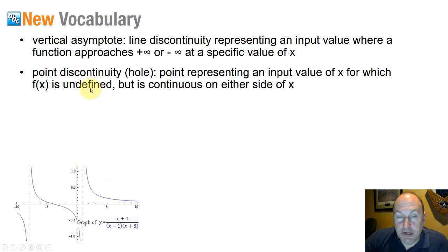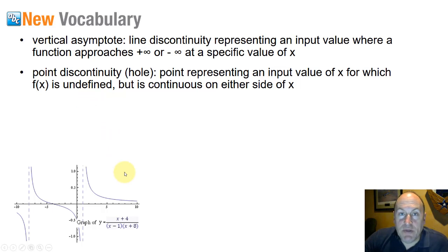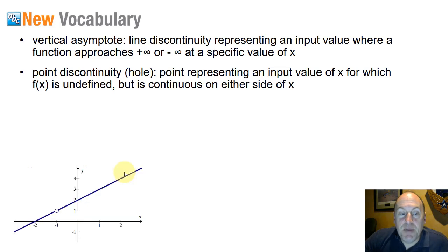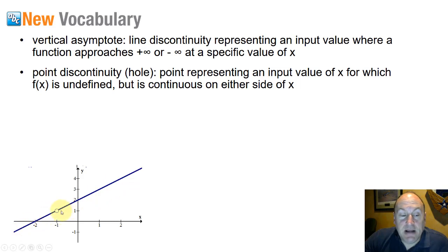A point discontinuity, also known as a hole, is a point where the function does not exist — the function is undefined. But instead of going towards positive or negative infinity on either side of the discontinuity, the function is actually continuous on either side. At x equals negative 1, the function is undefined, but it's continuous on either side of it.